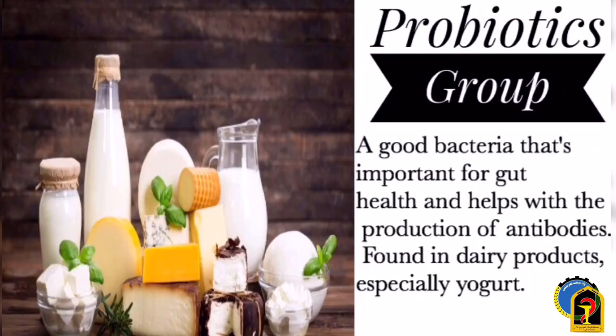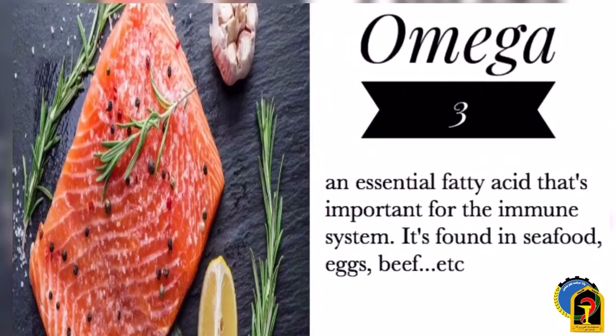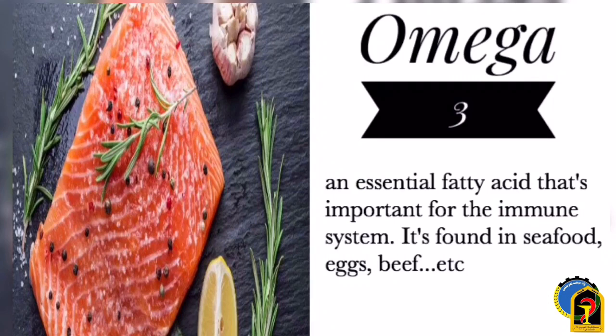Probiotics are good bacteria that are important for gut health and help with the production of antibodies, found in dairy products, especially yogurt. Omega-3 is an essential fatty acid that is important for the immune system and is found in seafood, eggs, and beef. Whole protein, found in healthy animal products like red meat, eggs, chicken, and seafood, provides all of the essential amino acids that our body needs to function properly.